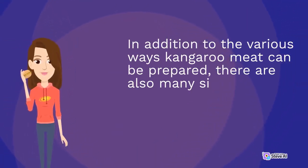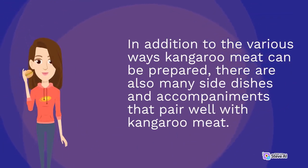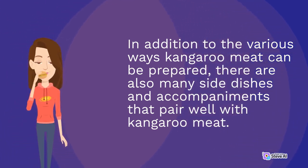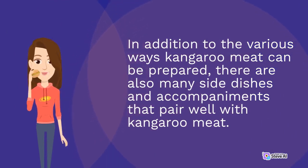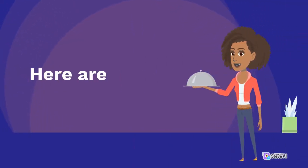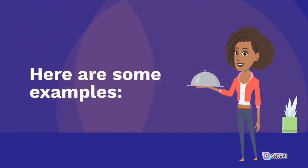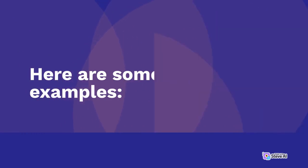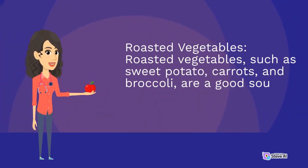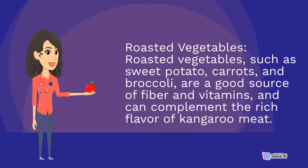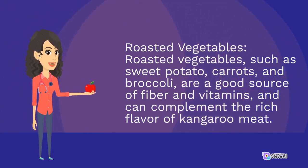In addition to the various ways kangaroo meat can be prepared, there are also many side dishes and accompaniments that pair well with kangaroo meat. Roasted vegetables, such as sweet potato, carrots, and broccoli, are a good source of fiber and vitamins, and can complement the rich flavor of kangaroo meat.